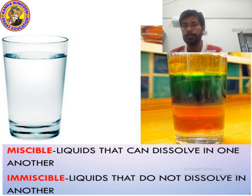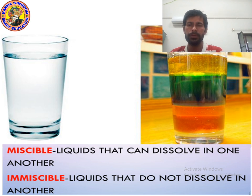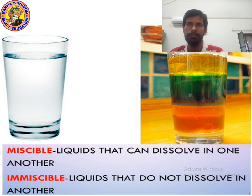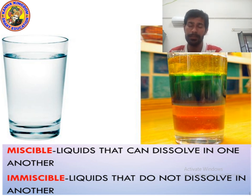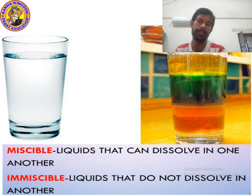Now if I try to dissolve soil, can I dissolve the soil? No, I can't dissolve it because soil cannot be dissolved. So such kind of solution is immiscible. Miscible means liquids that can dissolve in one another. Those liquids which can easily dissolve — for example, sugar can dissolve in water, sugar can dissolve in milk, so it is miscible.